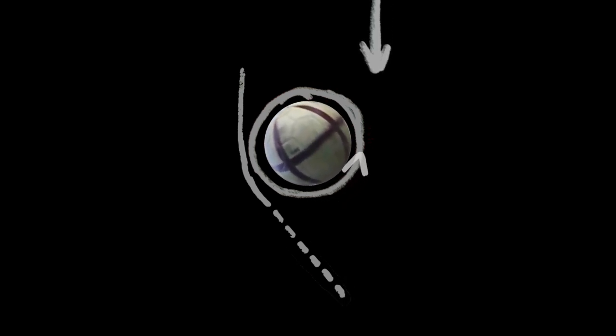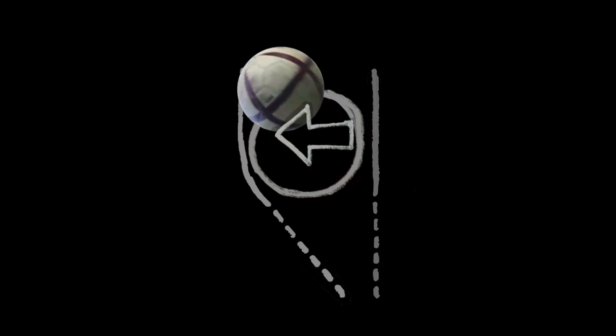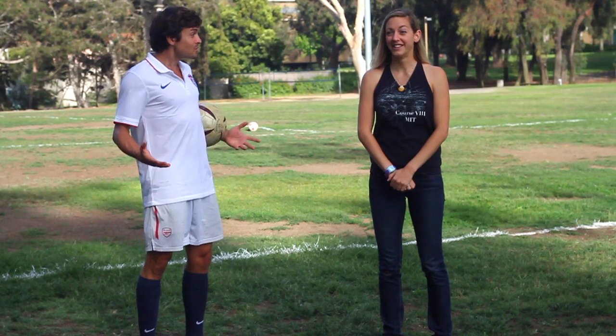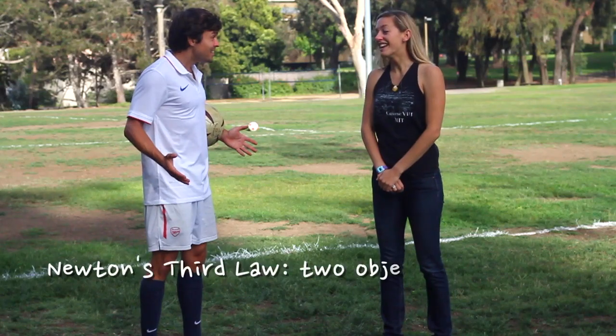The side moving in the same direction as the spinning ball is accelerated, follows the curve of the ball, and is deflected off to the right. The side moving against the spinning ball meets opposing air, can't continue around the ball, slows down, and goes straight. We end up getting a net flow of air to the right, and the ball must move left. Wait — that's Newton's third law. Yes!